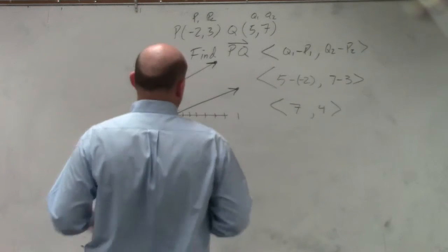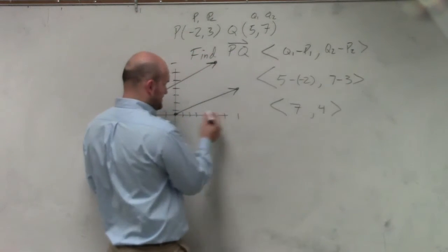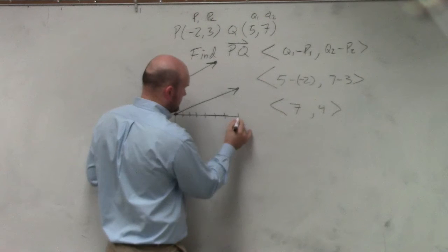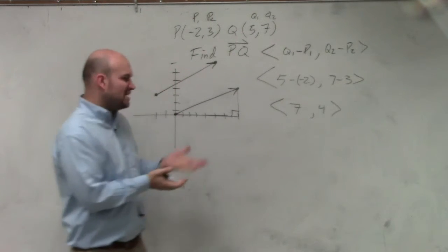So to find the magnitude in this example, all we simply need to do is basically, you can see that it's just like a right triangle from here.